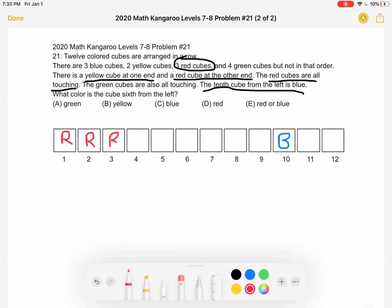And again, we knew from the problem that there's a yellow cube at one end and a red cube at the other, so there must be a yellow cube over here.